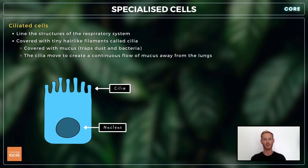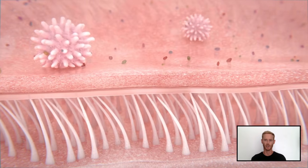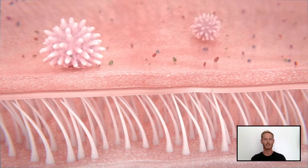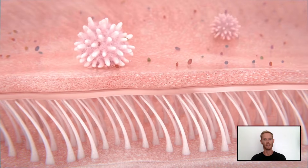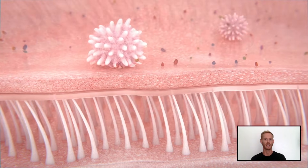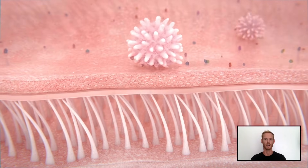Ciliated cells line the structures of the respiratory system and are covered with tiny hair-like filaments called cilia. These cilia are covered with mucus, which traps dust and bacteria, and are capable of moving to create a continuous flow of mucus away from the lungs.